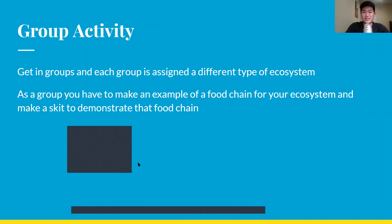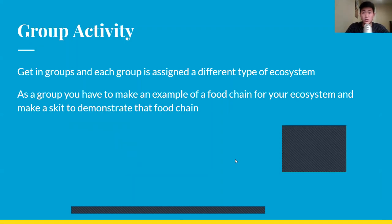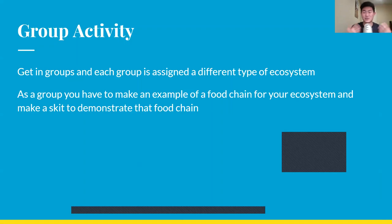Here's a quick activity: if you have some friends, siblings, or family, as a group you can try to think of an example of a food chain for your ecosystem, and maybe do a little skit to demonstrate that food chain.